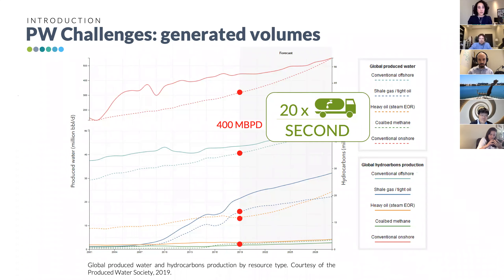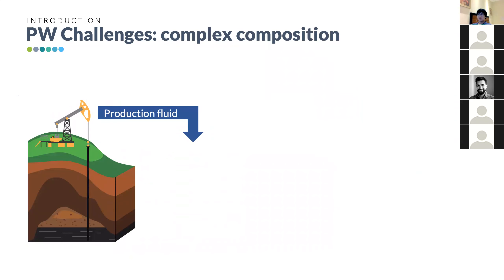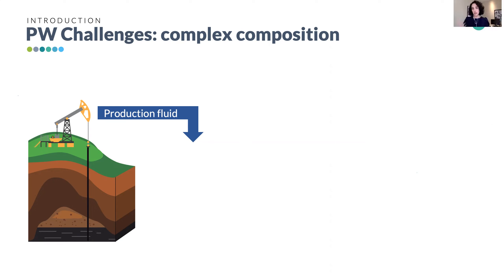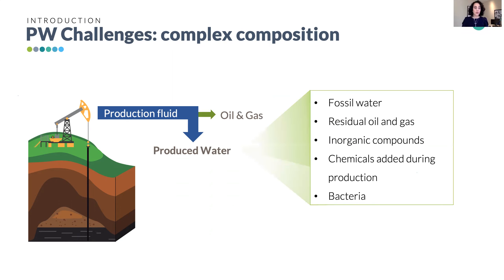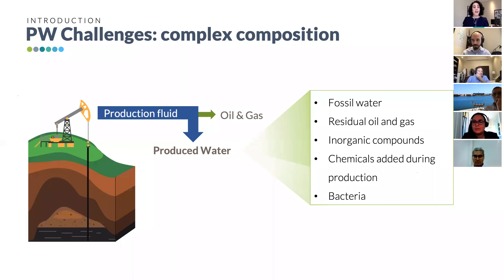This represents significant cost in transportation and water treatment. Another challenge is composition. Produced water comes from different hydrocarbons, so its composition is very diverse and specific to site location and operational conditions. Once the production fluid is extracted, the first step is to separate oil and gas where chemicals are applied to destabilize the emulsion, and the fluid left is what we call produced water.